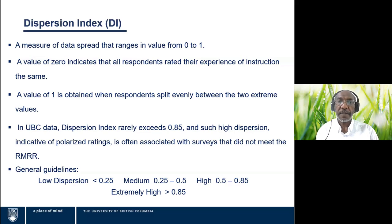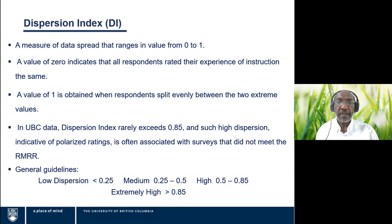In our data at UBC, the dispersion index rarely exceeds 0.85, and I have yet to see a value of one. If the dispersion is higher than 0.85, it usually indicates polarized rating and is often associated with small sections where the survey didn't meet our recommended minimum response rate (RMR). Our general guidelines: low dispersion is anything less than 0.25, and extremely high would be anything at 0.85 or above.